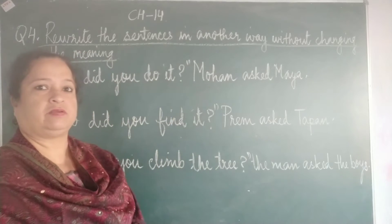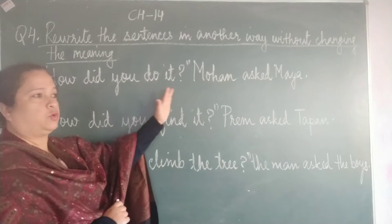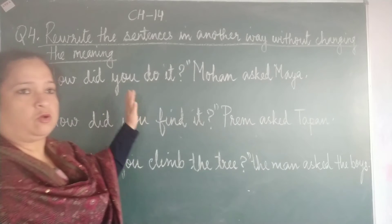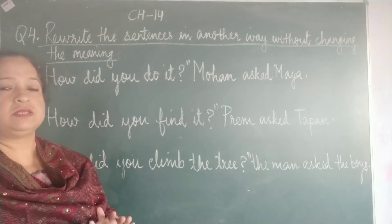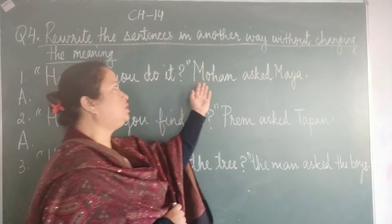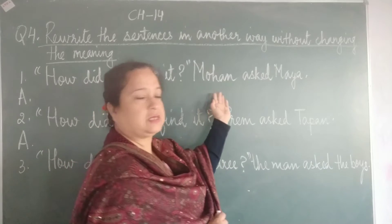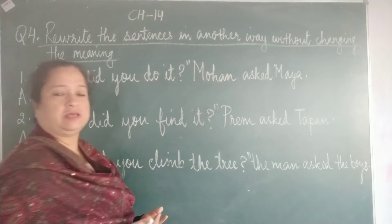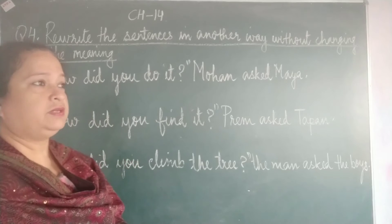Let us have a look at the first sentence: 'How did you do it?' If you take note of the sentence, it is written in inverted commas. That means this is the reported speech and this is being said by someone. So who is saying this? Mohan is saying this. And who is he talking to? He is asking Maya. So Maya is the receiver of the action and Mohan is the doer of the action.